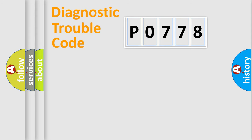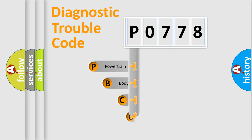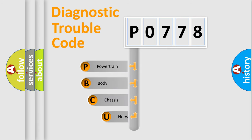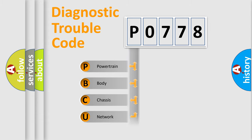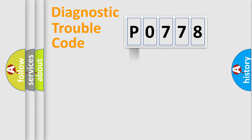First, let's look at the history of diagnostic fault code composition according to the OBD2 protocol, which is unified for all automakers since 2000. We divide the electrical system of an automobile into four basic units: powertrain, body, chassis, and network.